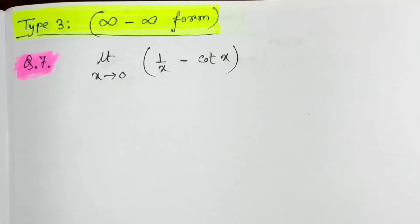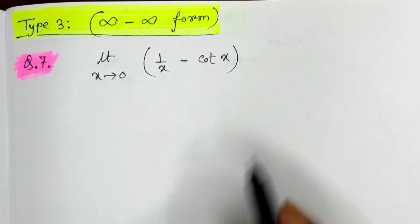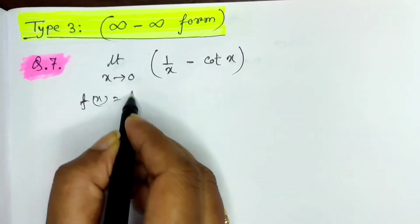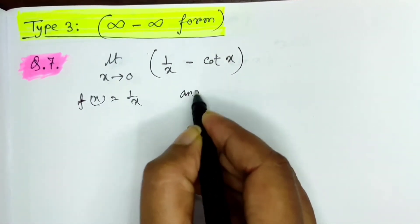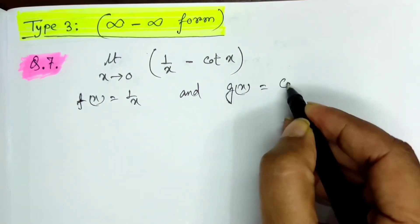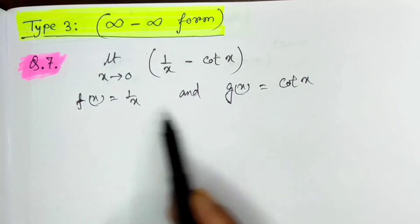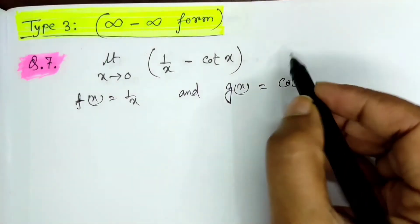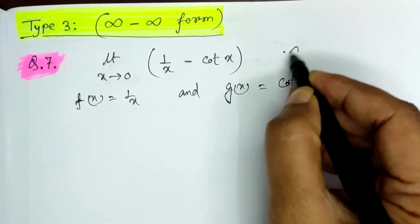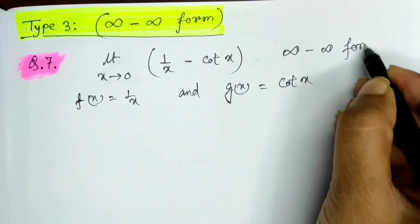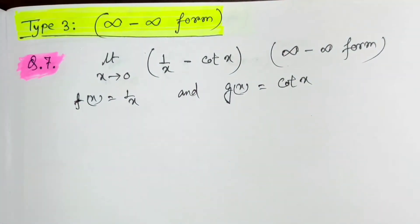Another example: f(x) = 1/x and g(x) = cot x. When x tends to 0, f(x) = ∞ and cot 0 = ∞. So this is in the form of infinity minus infinity. If a function is in this format, we can convert it into the 0 by 0 form quite easily.